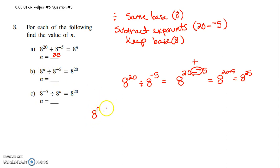So 8 to the sum number, subtract a negative 5. And I have to come up with 8 to the 20th. So 8 to the sum number, minus a negative 5 will get me 20. Minus a negative becomes plus, so 8 to the sum number plus 5 will get me 8 to the 20th.